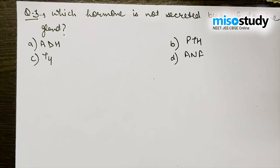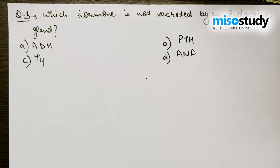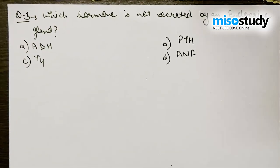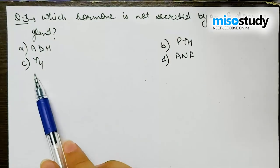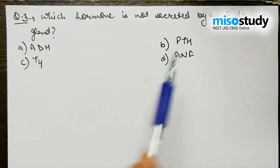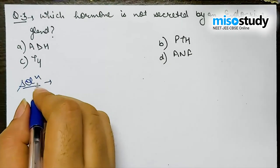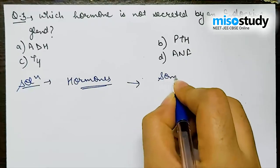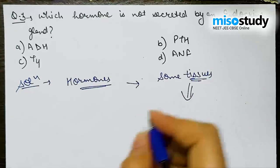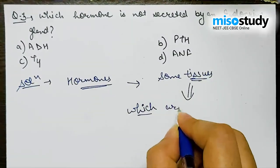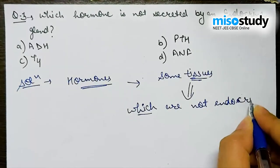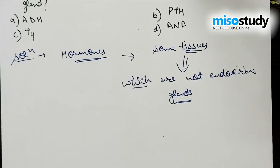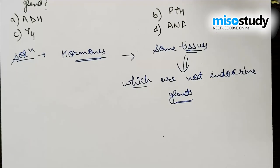The next question: which hormone is NOT secreted by an endocrine gland? We know that endocrine glands are ductless glands that secrete hormones. The options are: Option A: ADH, Option B: PTH, Option C: T4, and Option D: ANF. Hormones are also secreted by some tissues which are not endocrine glands, as discussed — like the liver and heart.